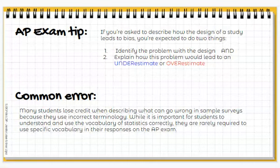Here are some AP exam tips. If you're asked to describe how the design of a study leads to bias, you're expected to do two things: first, identify the problem with the design — like it's a convenience sample or voluntary response; and then explain how this problem could lead to an underestimate or an overestimate of the parameter we're looking for. You have to have that second component to get full credit.